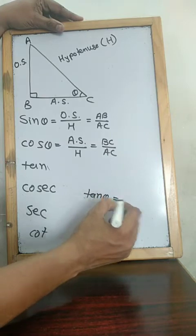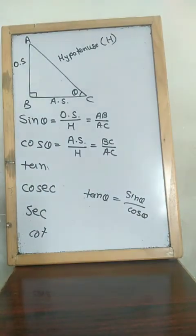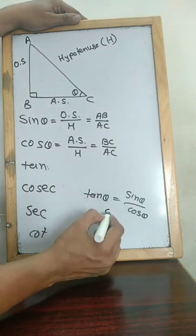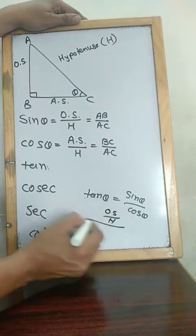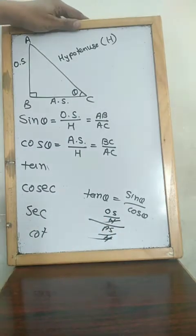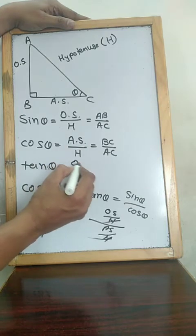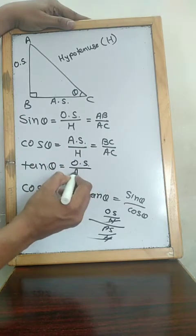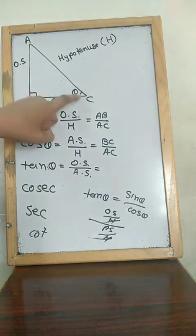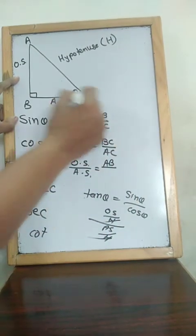Now what is tan? Tan theta is equal to sin theta upon cos theta. Sin is opposite side upon hypotenuse, and cos is adjacent side upon hypotenuse. The two hypotenuses cancel out. So tan theta = opposite side upon adjacent side. So for angle C: tan theta = AB upon BC.